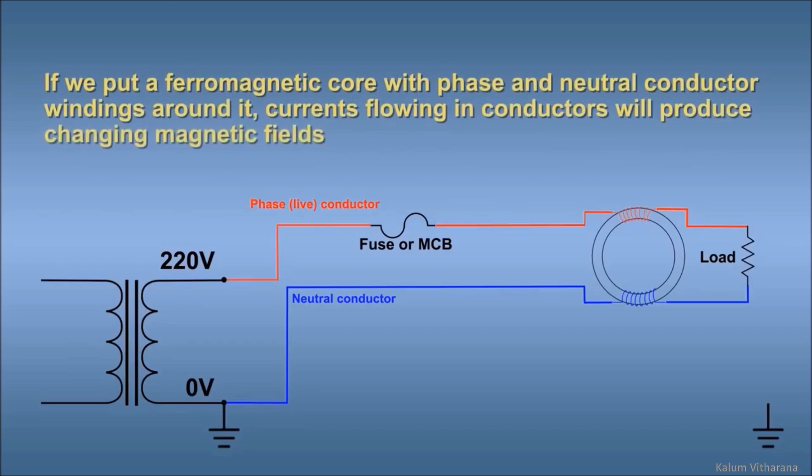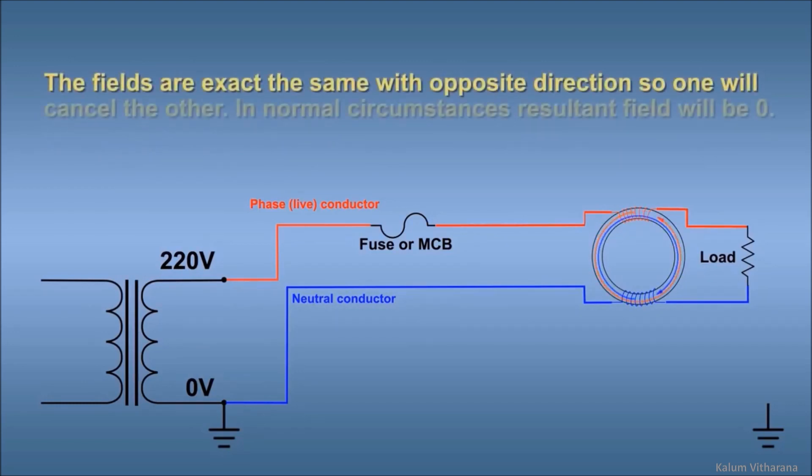If we put a ferromagnetic core with the phase and neutral conductors forming windings around it, the currents flowing in the conductors will produce changing magnetic fields.